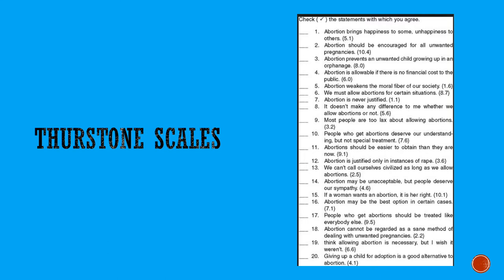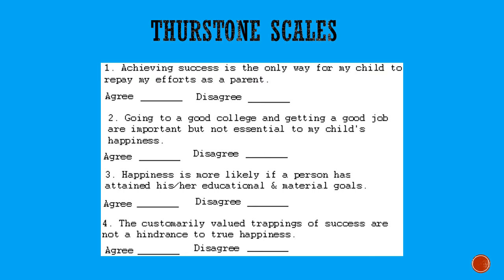This was a revolutionary thing back in the 1920s when it was first developed, because prior to that time there was no way to quantify attitudes or compare the strength of attitudes between one group of people and another. This was the first attempt for social scientists to be able to do something like that. Here's a close-up look at what a Thurstone scale would look like if you were filling it out: 'Achieving success is the only way for my child to repay my efforts as a parent — agree or disagree.' Thurstone scales aren't as popular as they once were, but you still see them around.